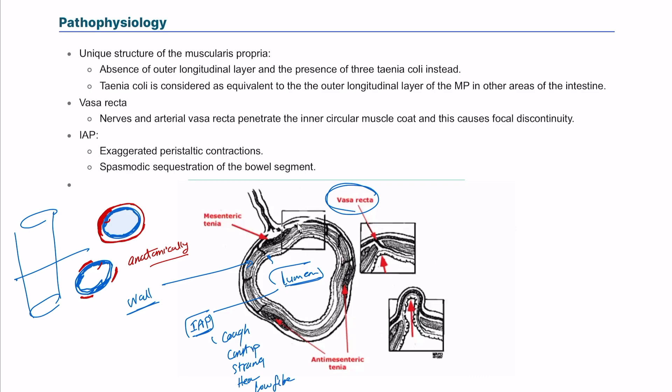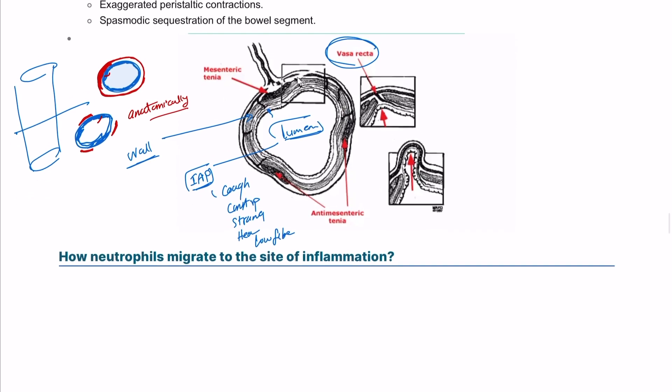So the pathophysiology of the diverticular disease or diverticulosis is you have unique structure of the muscularis propria, absence of outer longitudinal layer, and its replacement by something called taeniae coli, which is three layers that's not as strong as the outer longitudinal layer. The vasa recta, which are the nerves that pass through the wall, and is not protected from the outside. The third thing is increased intraluminal pressure, due to exaggerated peristaltic movement, and also the low-fiber diet, spasmodic contraction, and so on.